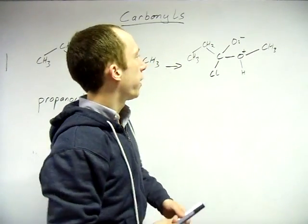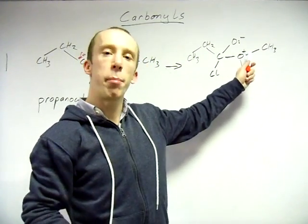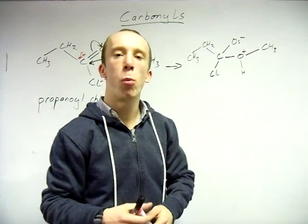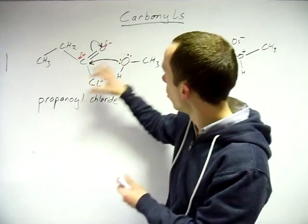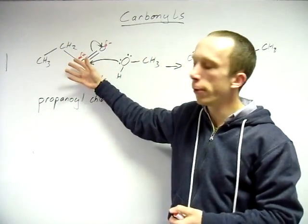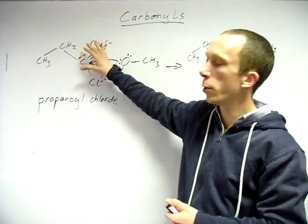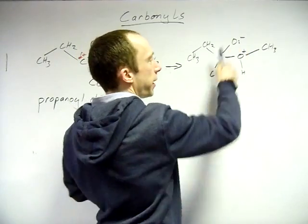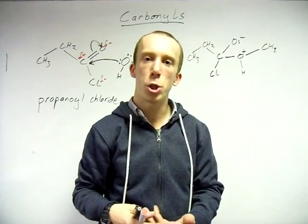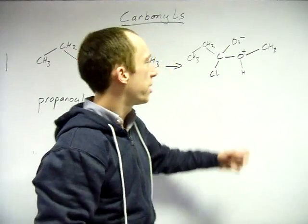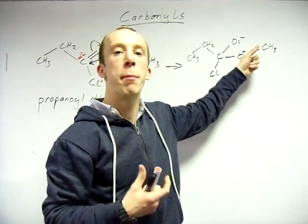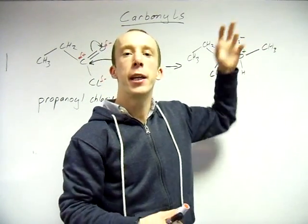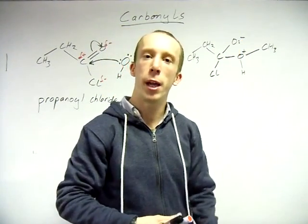One mistake people make is forgetting the positive charge on the oxygen. Charge must be conserved across the reaction — we start neutral, no full positives or negatives. When the electrons move up to the oxygen giving it a negative charge, there must be a corresponding positive charge somewhere. Make sure you show lone pairs here for electron movement.